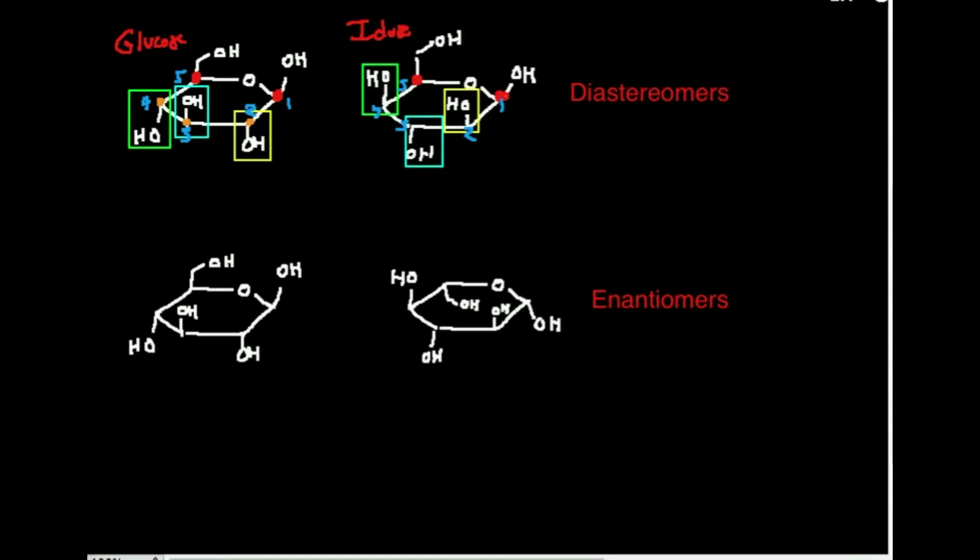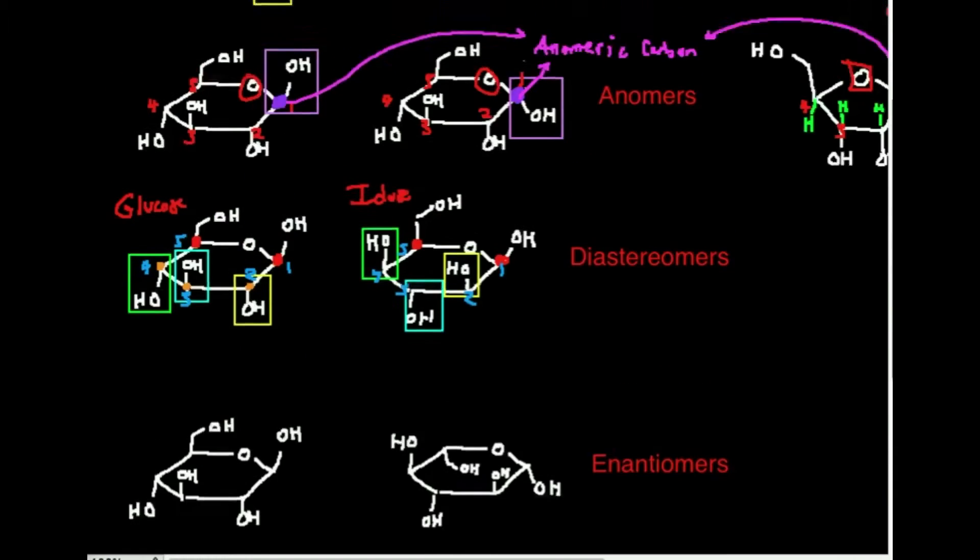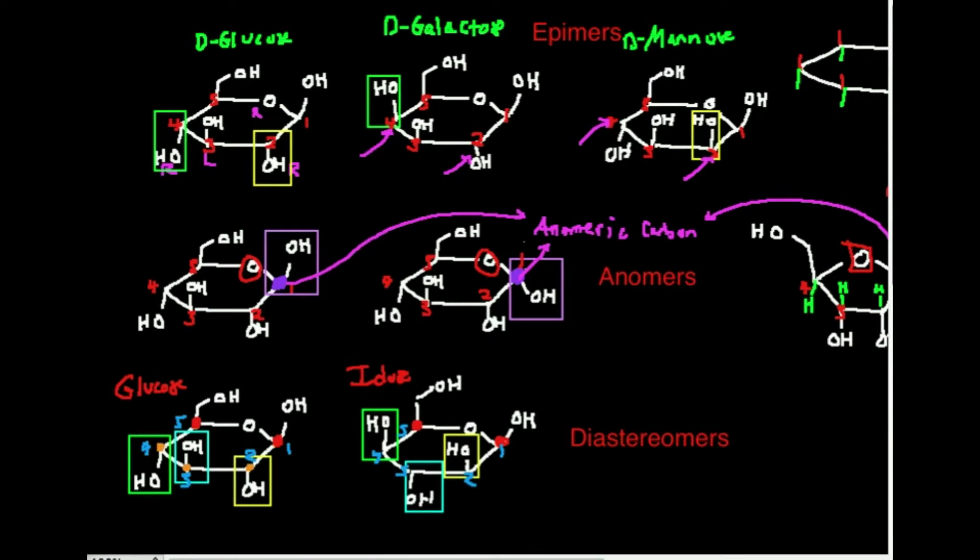That classifies these two, glucose and eidos, as diastereomers. In fact, one thing we talked about in the last video, I'll go ahead and show it again. Remember we said that glucose and galactose differ in stereochemistry in only one position, it's position four. In glucose, four is down. In galactose, four is up.